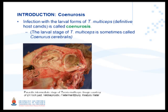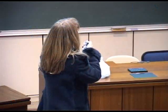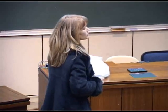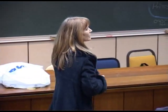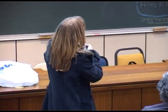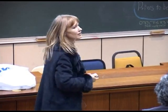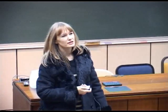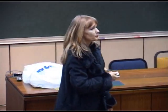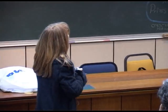Cenariosis is caused by Taenia multiceps. Taenia multiceps is also a zoonosis and causes cysts in human beings. The definitive host for those is usually carnivores. There are many more species of these parasites - not only Taenia multiceps causes zoonotic diseases or diseases in livestock; there are a few others identified, but they're of minor importance.